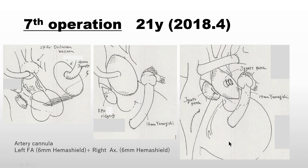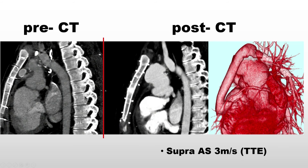Professor Yamagishi provided a Gore-Tex tri-leaflet valve with sinus of Valsalva, then placed in a right ventricle to pulmonary artery shunt. After that, the patient was okay. Supraaortic stenosis was still a little present, but pressure gradient on cardiac catheterization was fine.